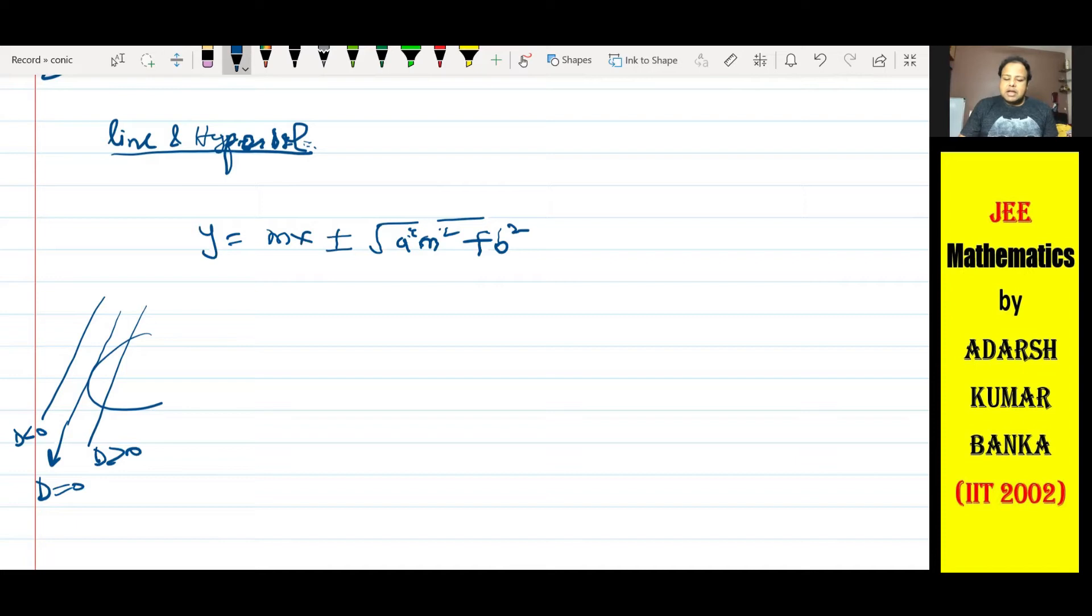Ellipse mein line ka equation tha, tangent ka equation tha, y equals mx plus minus under root a square m square plus b square. Hyperbola ki case mein kya hoga? If you remember what I told in the very beginning that b square will be shifted, converted to minus b square. So agar main isko minus b square kar deta hun, this will become tangent to the hyperbola. This is equation of tangent to the hyperbola in slope form.